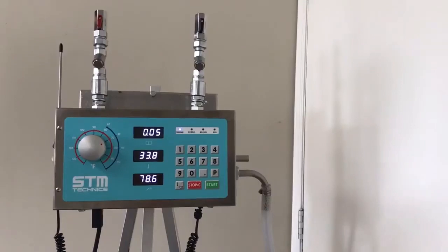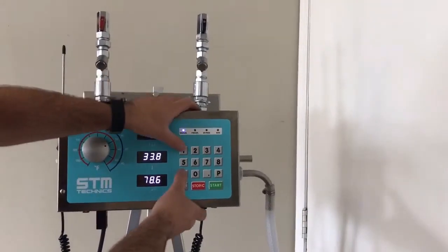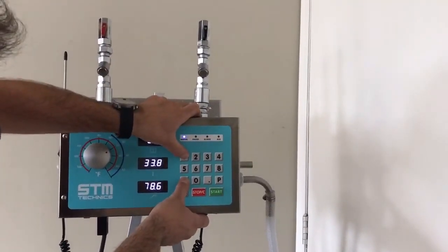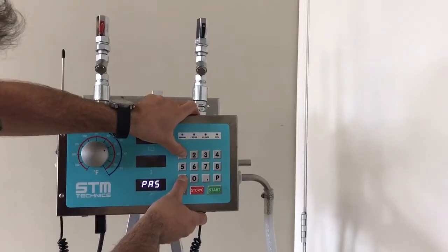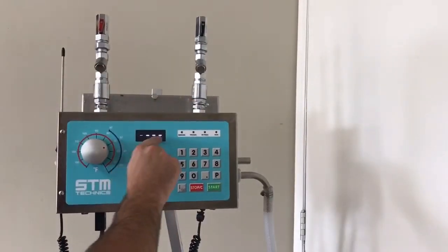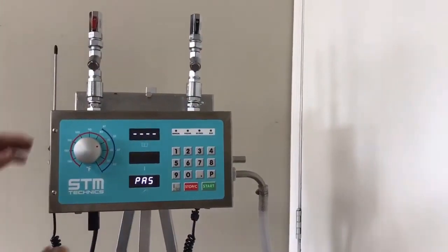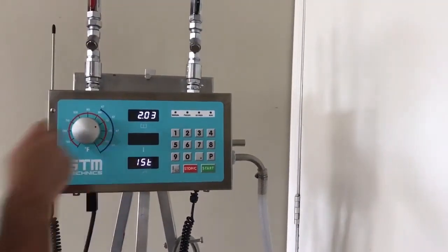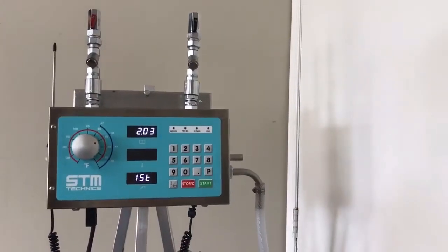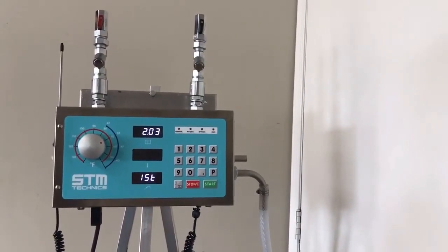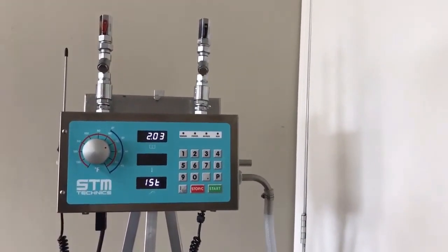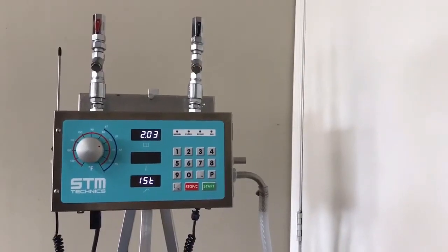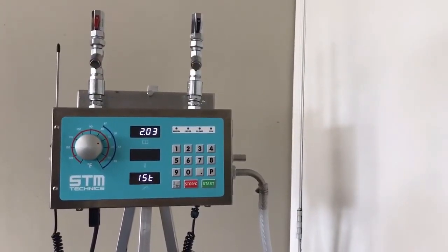First we're going to go into our internal parameters. To do so we press numbers one and nine together and hold. We have four dashes on the top. We punch in the code 1131 and we go into our first parameter window which is our tolerance. The unit comes from the factory set for a tolerance of two percent. You can reduce that to one percent.